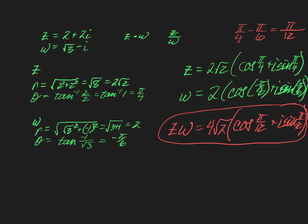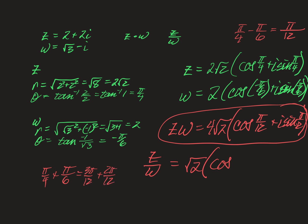And then for z divided by w: divide the radii — 2√2 over 2 is just √2. For the angle, we do pi over 4 minus negative pi over 6, which becomes pi over 4 plus pi over 6. That's 3pi over 12 plus 2pi over 12, or 5pi over 12. So z over w equals √2 times cosine 5pi over 12 plus i sine 5pi over 12.